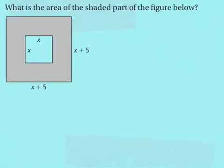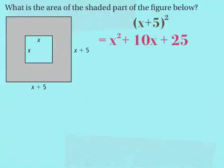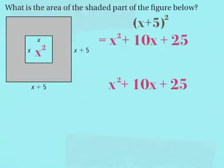This next example asks for the area of the shaded part of a figure. To find the area of just the shaded part, I need to find the area of the larger square, which has a side length of x plus 5, and subtract the area of the smaller square, which has a side length of x. Using our special case, x plus 5 squared equals x squared plus 10x plus 25. The area of the smaller square is x times x, which is x squared. Now I need to take x squared plus 10x plus 25 and subtract x squared.